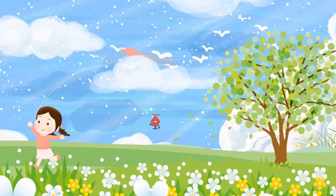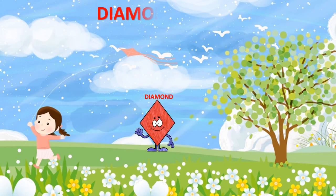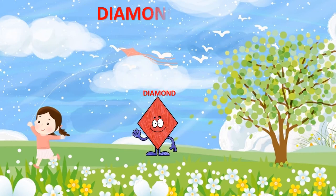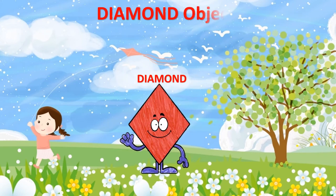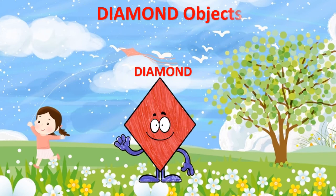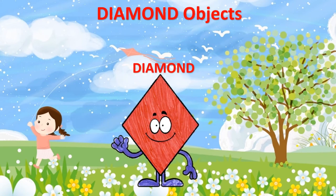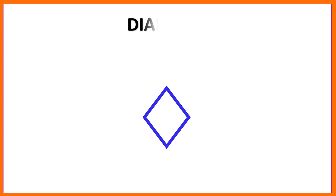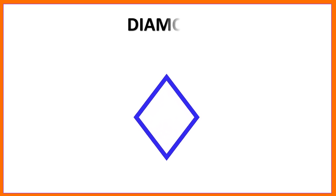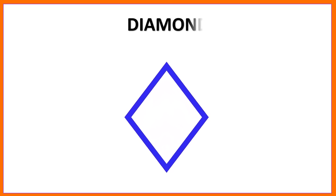This video is going to talk about diamond shape. Let's learn about the name of the shape and see how we can draw it and their object names. Diamond — D-I-A-M-O-N-D.